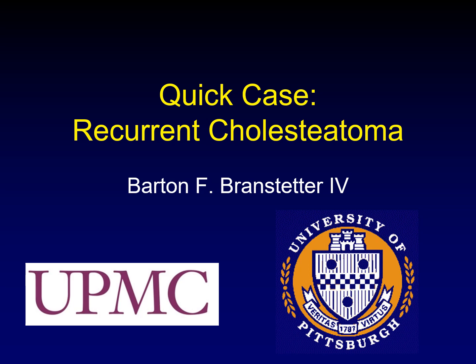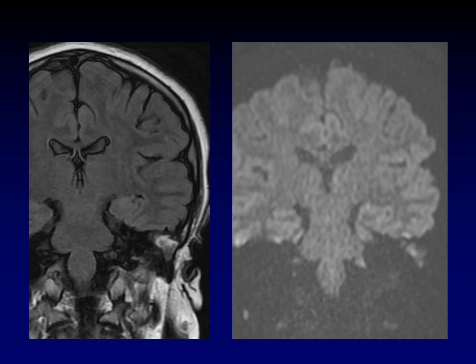This is a case of a 17-year-old male who has had a cholesteatoma that has been resected, and now they're concerned about a recurrent cholesteatoma. Here are the critical images. This is a coronal T2, and you can see some things in that evacuation pocket, the mastoidectomy bowl. And here on the diffusion-weighted images, you can definitely see something.